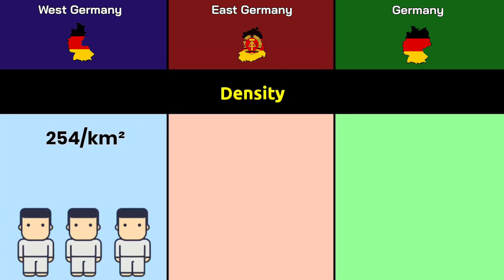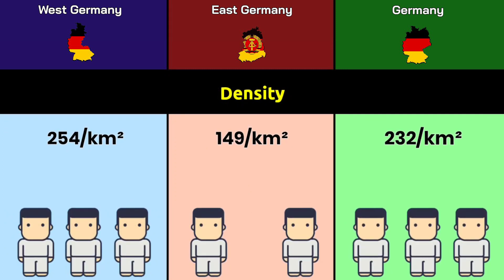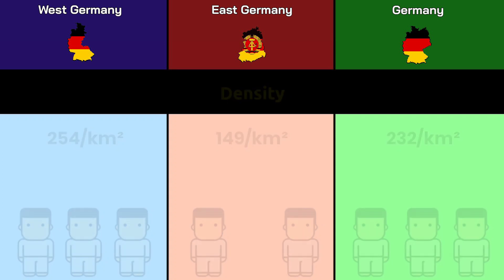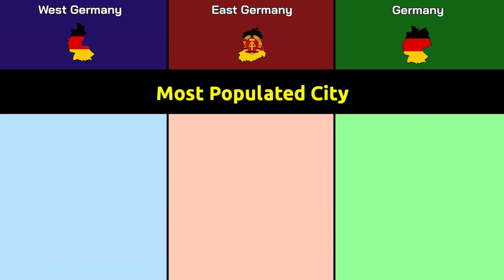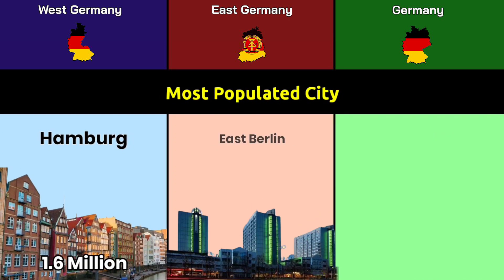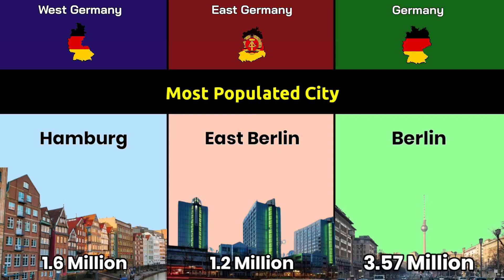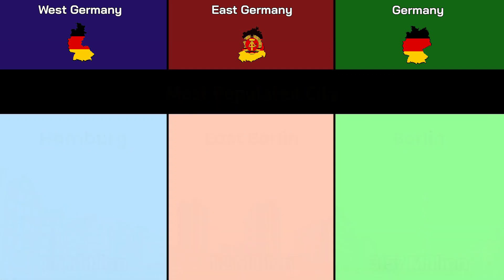Density: West Germany had 254 per square kilometer, East Germany had 149 per square kilometer, and Germany has 232 per square kilometer. Most populated city: West Germany's was Hamburg with 1.6 million, East Germany's was East Berlin with 1.2 million, and Germany's is Berlin with 3.57 million.